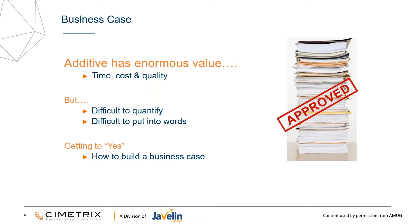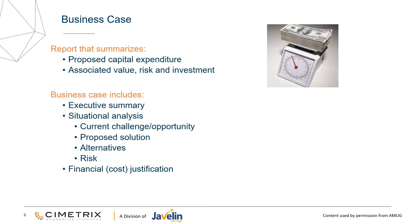So what is the business case? For those that have never done one before, it's really your summary and explanation of what you're going to be doing and why you need to purchase this capital equipment. There are different sections of a report. You start with usually an executive summary, move on to your situational analysis with what your opportunity is, what the solutions are, alternatives and risks. And then the meat and potatoes that most CFOs and managers want is really about the financial cost justification.